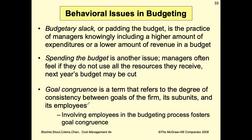Behavioral issues in budgeting include budgetary slack or padding — the practice of managers knowingly including higher expenditures or lower revenues in a budget. Spending the budget is another issue, as managers often feel that unused resources may lead to budget cuts the following year. Goal congruence refers to the degree of consistency between goals of the firm, its subunits, and its employees. Involving employees in the budgeting process fosters goal congruence.